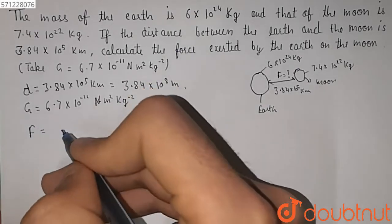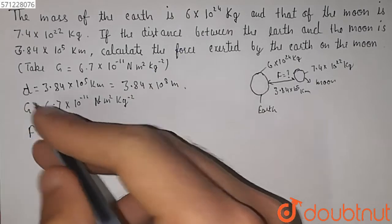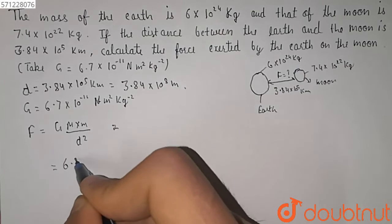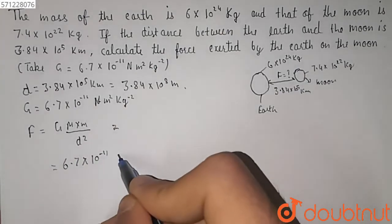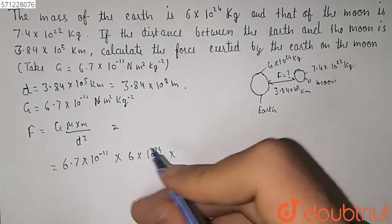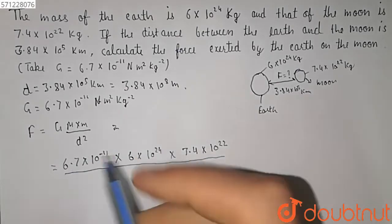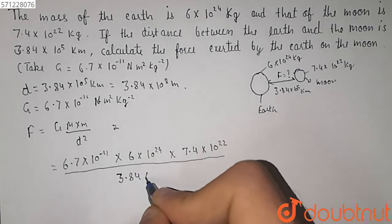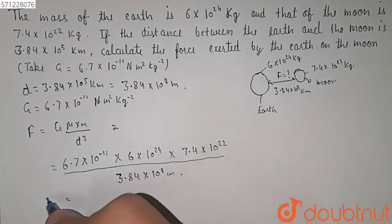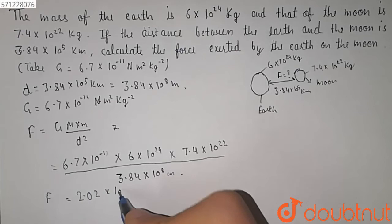We know that the gravitational force is equal to G times M times m over d square. Substituting the values: G is equal to 6.7 x 10 raised to power minus 11, the mass of the Earth is 6 x 10 raised to power 24, the mass of the Moon is 7.4 x 10 raised to power 22, and d is equal to 3.84 x 10 raised to power 8 meters. After calculating, we get the gravitational force equal to 2.02 x 10 raised to power 20 newtons.